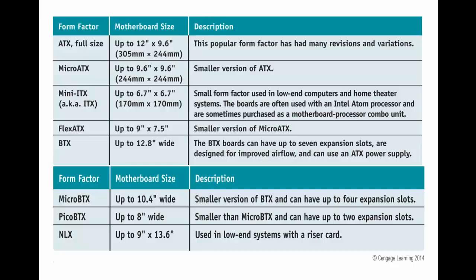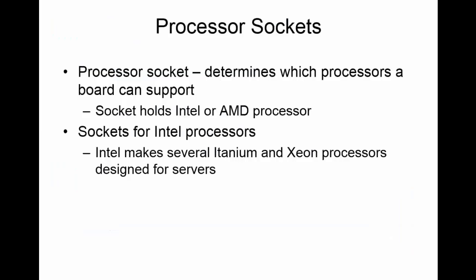Another important feature of a motherboard is the processor socket. The processor socket and chipset determine the processor a board can fully support. A socket for a personal computer is designed to hold either an Intel or an AMD processor. Some older ones were installed in a long narrow slot, but today's processors use sockets. Make sure you look at the list of different socket types because this will definitely appear on your 801 exam. Know that Intel makes the Itanium processors — the i3, i5, i7, and the Xeon processors, which are primarily designed for server use. Look at figures describing the different Intel socket names and get a feel for their processor family.